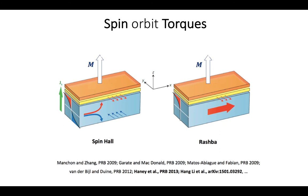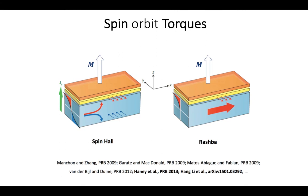The Spin Hall Effect occurs when a current is flowing from left to right — in this figure, the upper interface of the heavy metal layer has a net spin or net polarization of spin, while in the lower part of the heavy metal layer you have a net spin in the opposite direction. The Rashba Effect similarly creates a net polarization of spin on the top layer when current flows left to right. Both effects create a net polarization at the interface, which creates a torque on the free layer above it to change its magnetization state.